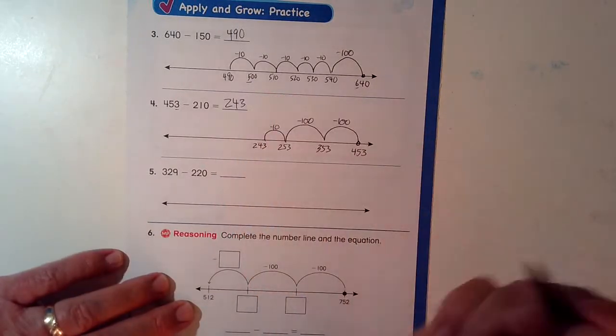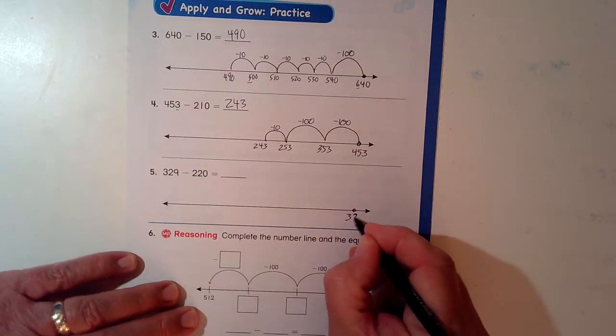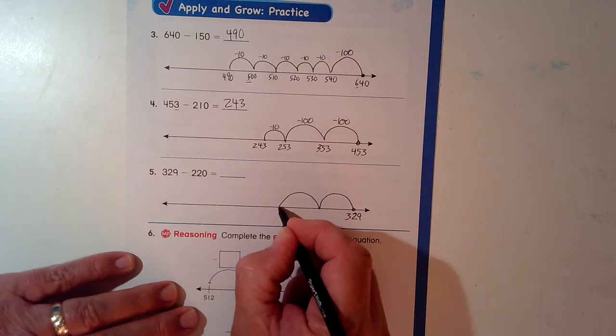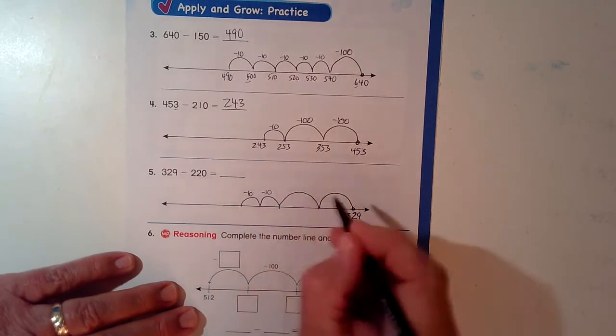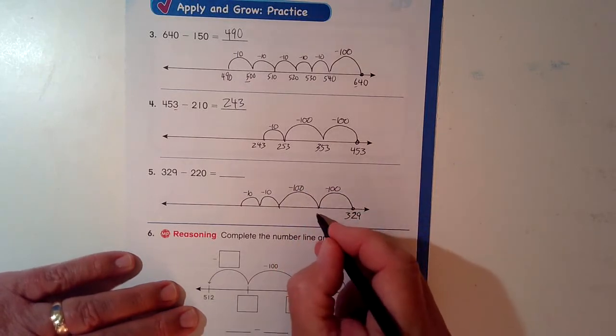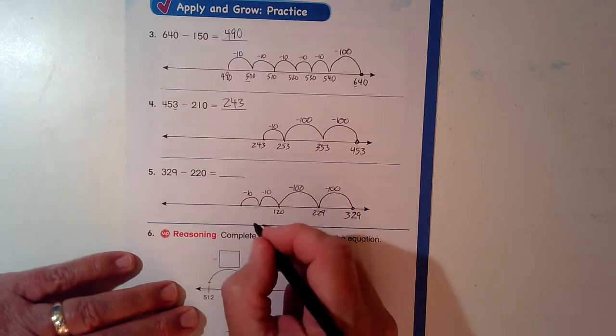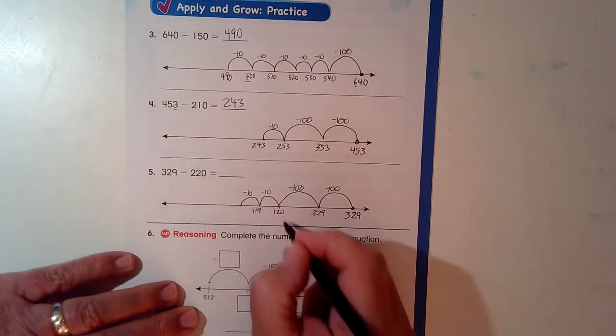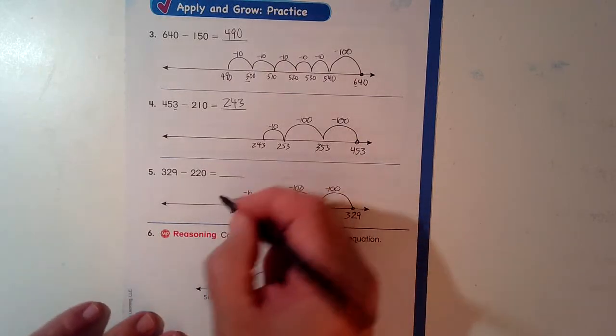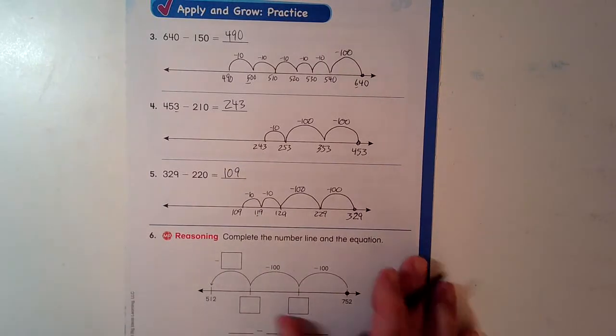Make sure you put it on the line. 329 minus 220. 329 minus 100, 200, 10, 20. Make sure you label so you don't get distracted or don't get confused. 329 minus 100, 229. Minus 100, 129. Minus 10, 119. Oops. And minus 10 more, 109. Don't forget the placeholder. When you take away that last 10, keep the zero there to keep your spot. Okay?